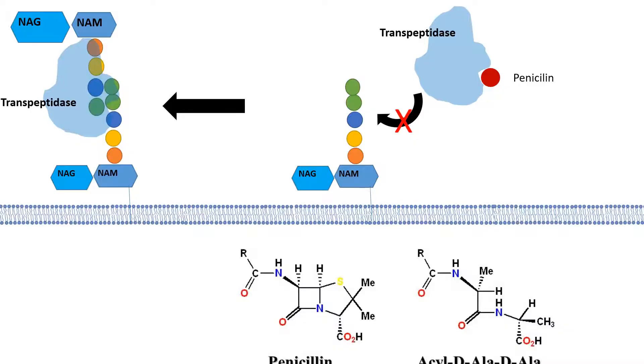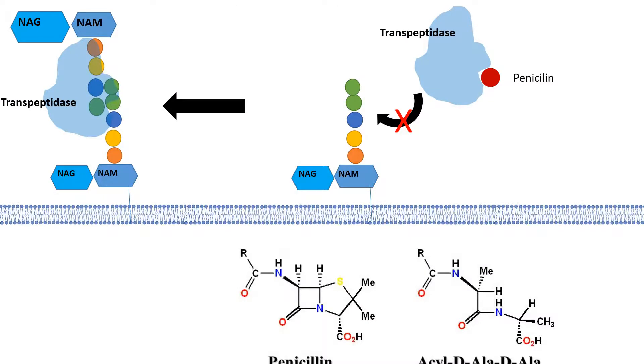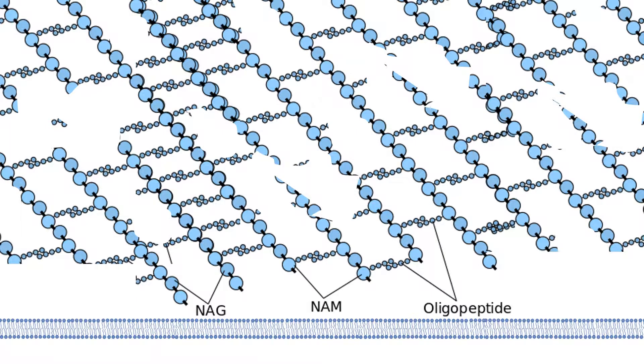What penicillin does is it already binds to the active site of the transpeptidase, because penicillin has a very similar structure like D-alanine D-alanine. Thereby, penicillin can interfere with the process of transpeptidation.